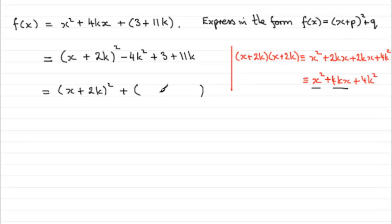And I could write minus 4k squared plus 3 plus 11k, but I don't like the look of that. I'm going to start with the 3 and do it in ascending powers. 3 plus 11k minus 4k squared.